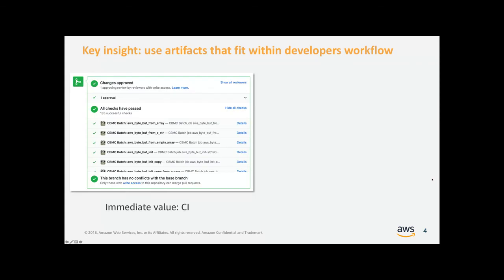It's also really important that we provide immediate value to the developer. Developers at Amazon use code reviews and continuous integration to ensure their code is of high quality. Every commit gets checked against unit tests, integration tests, and now also against all the formal verification work that we've done. This provides two values: if you get back a checkmark, you know the code you've written has not violated any of the safety properties verified about your code. If you get back an X, you know immediately — before the code ever reaches customers — that there's a potential issue and you can fix it right away.